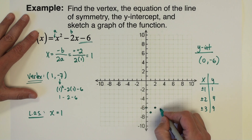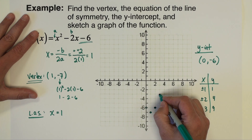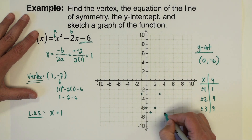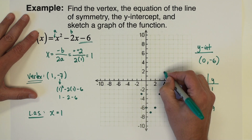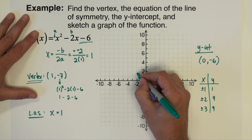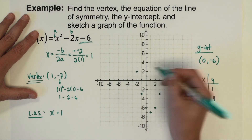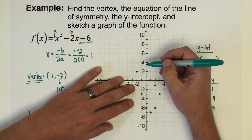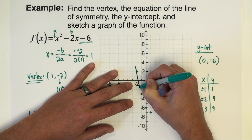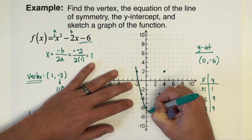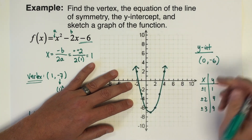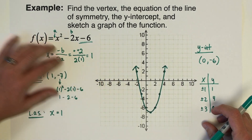Now we can complete the graph using our point pattern. Starting from the vertex, 1 squares to 1, 2 squares to 4, 3 squares to 9 — we plot those in both left and right directions from the vertex. With enough points plotted, we go ahead and connect them and draw our parabola. That's our graph of the function.